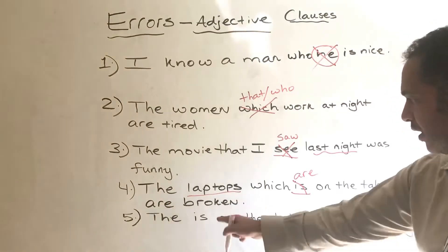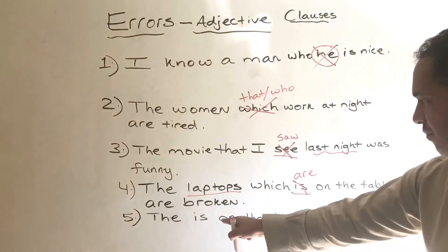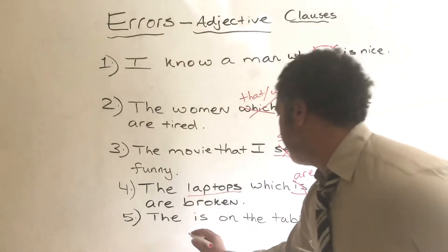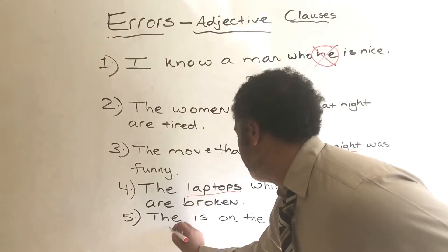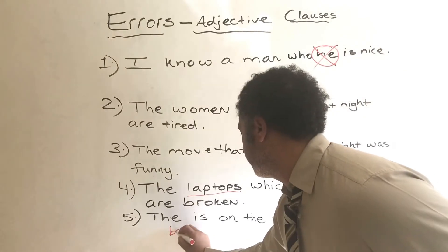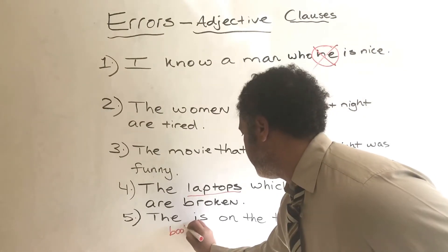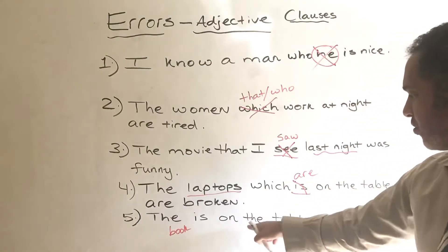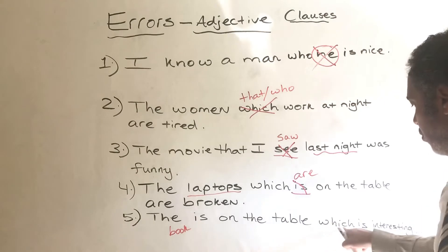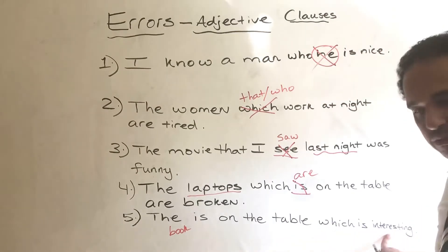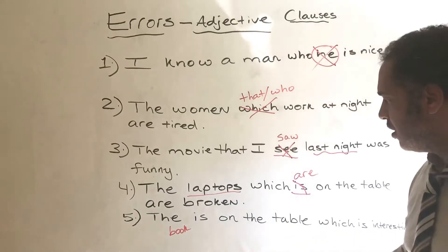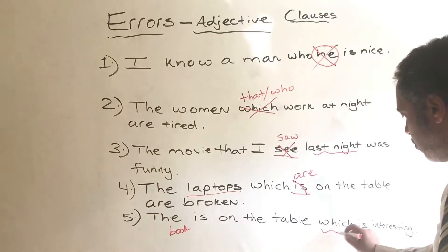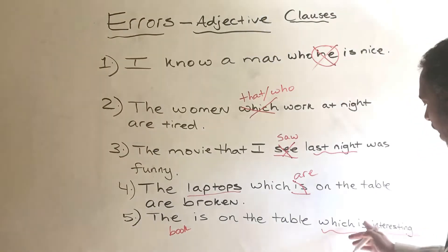The last one — I made a mistake here. The book: 'The book is on the table which is interesting.' The problem with this one is where we are putting the adjective clause.